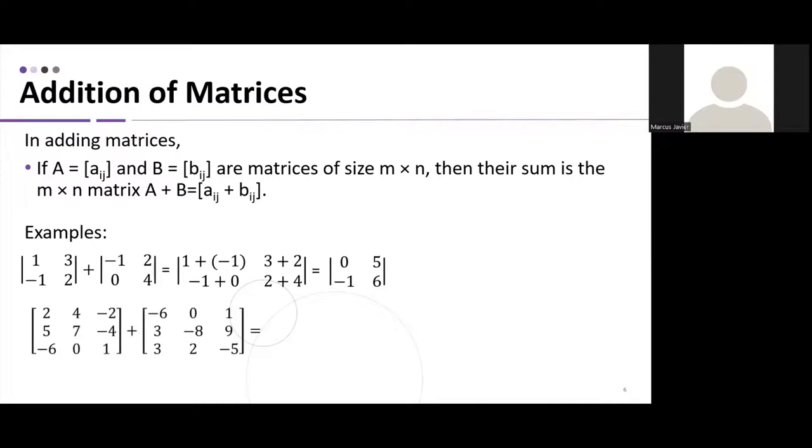Another example. We have here again, a 3 by 3 matrix. It should be 3 by 3 as well with its partner. Let's have a look. Matrix A is 3 by 3. Matrix B is 3 by 3. So, we could directly add them together. Using the same rule, we have here 2 plus negative 6, 4 plus 0, negative 2 plus 1, 5 plus 3, 7 plus negative 8, negative 4 plus 9, negative 6 plus 3, 0 plus 2, 1 plus negative 5. And then, the result is negative 4, 4, negative 1, 8, negative 1, 5, negative 3, 2, and negative 4. That's how you add matrices.